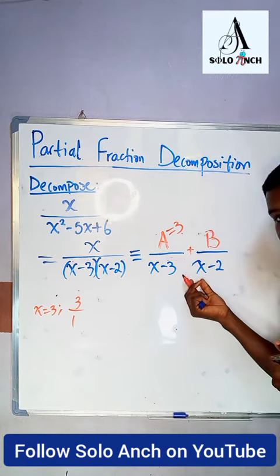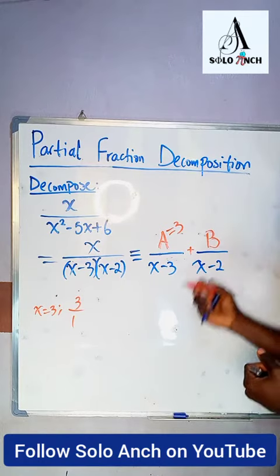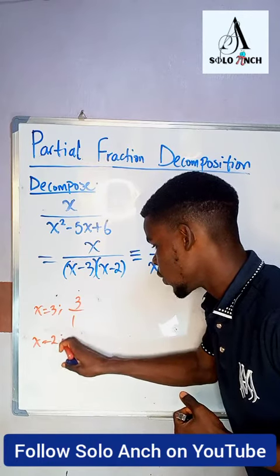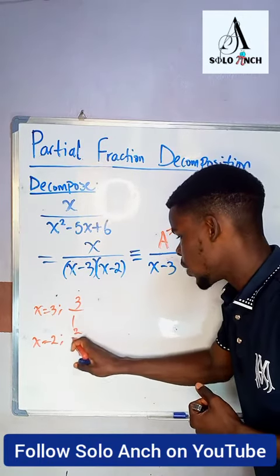Now to get the value of B, you come to this denominator. Well, this denominator will be 0 if x is equal to 2. So you cover that factor x minus 2, substitute x is equal to 2 into the other terms.